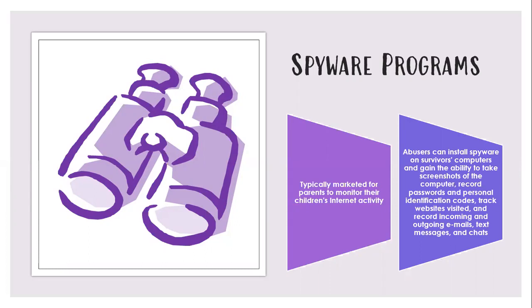Next, we have spyware programs. Spyware programs are typically marketed to parents as a way to monitor their kids' phones or computers to keep them safe. Abusers are using these spyware programs on survivors' computers and phones to track them, record their passwords for different accounts, read their emails, maybe even intercept emails so the survivor isn't receiving an important message, read their text messages, and see what websites they've visited. An abuser might put this on a survivor's phone for multiple reasons — maybe they think the survivor is cheating, or they want to see if the survivor is planning on leaving.